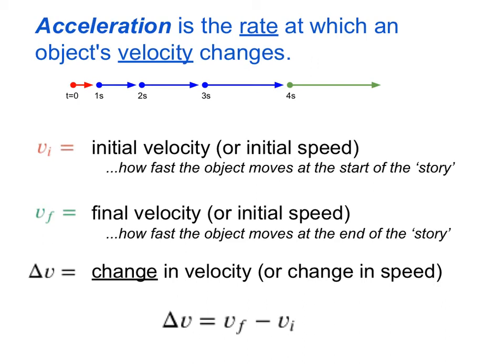So we've been learning that acceleration is the rate at which an object's velocity changes. We can picture that with a motion map as is shown here. But what does that really mean if we wanted to look at values, at numbers, that describe this change in something's motion?